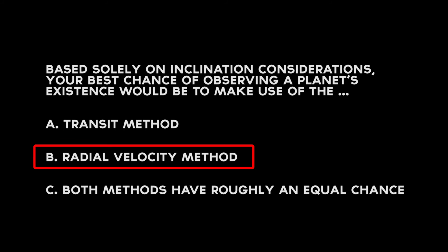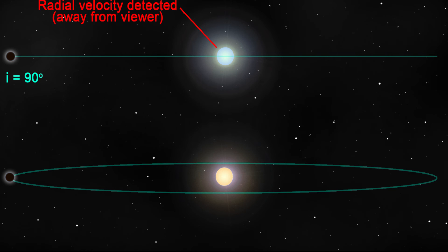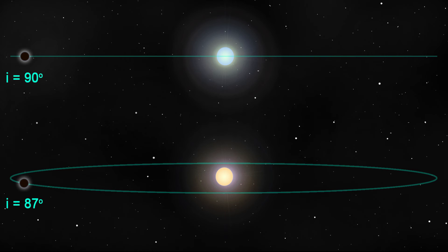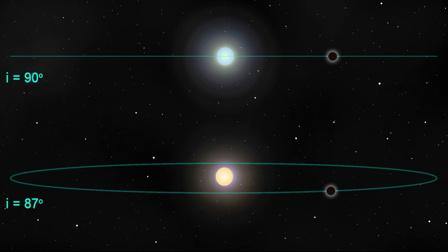Transits only occur for a very small range of inclinations near ninety degrees. Radial velocity works best near ninety degrees, but as long as the inclination is not zero degrees, there is some component of velocity along your line of sight. A graphic shows an extrasolar planet at inclinations of ninety degrees and eighty-seven degrees: at ninety degrees, either method works; at eighty-seven degrees, a transit no longer occurs, though there is still a large radial velocity — and that remains true for many smaller values of inclination.